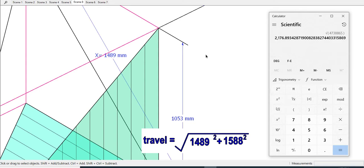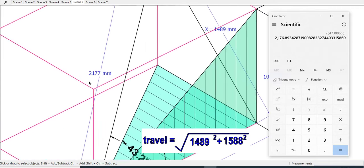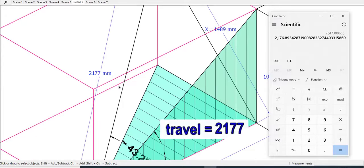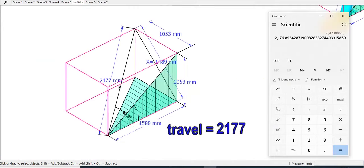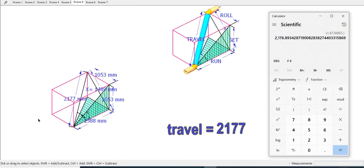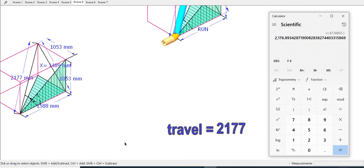I've already found, so the value of travel is 2177 millimeters.